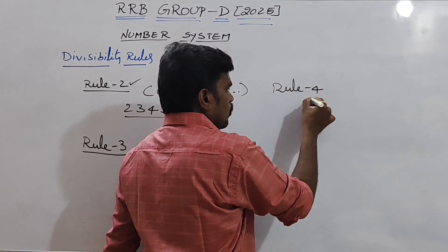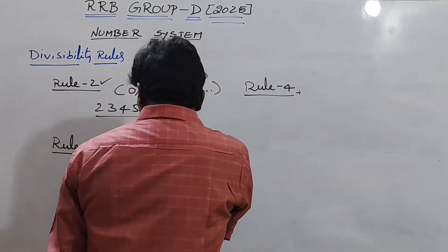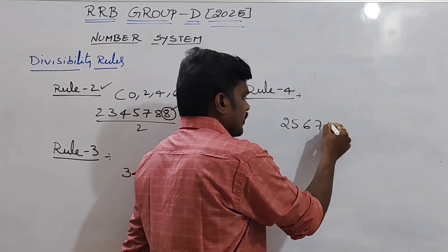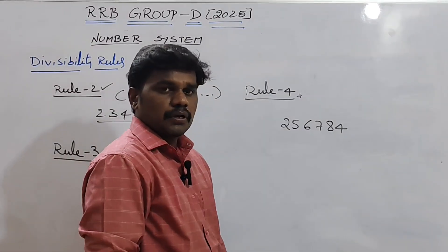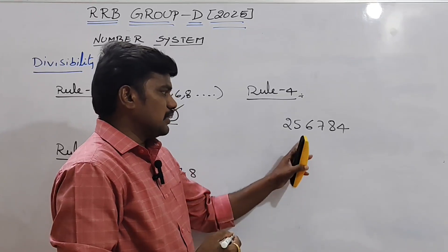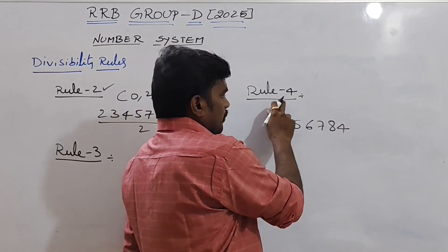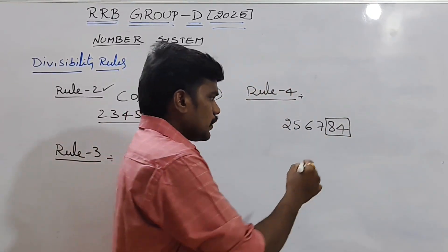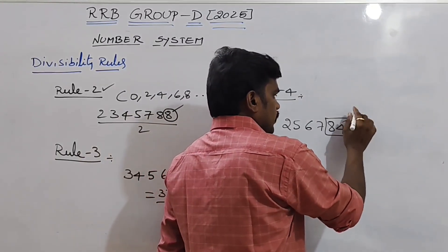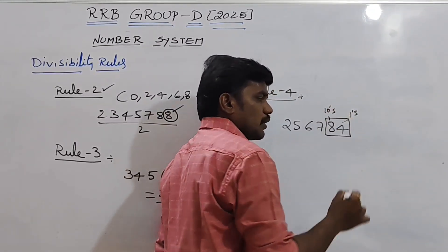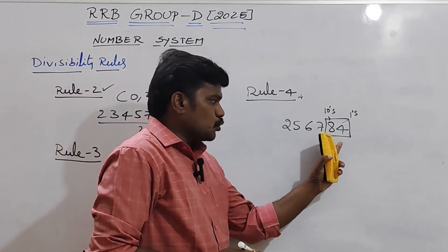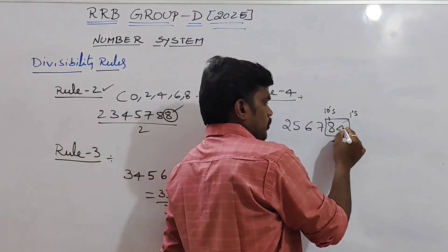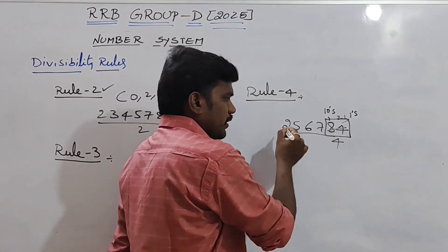Rule number 4: Take the number 2,567,884. In rule number 4, look at the last 2 digits — the 1's place and the 10's place. Whenever the last 2 digits are divisible by 4, the entire number is divisible by 4. Here the last 2 digits are 84, and 84 divided by 4 is 21 times, so this number is definitely divisible by 4.